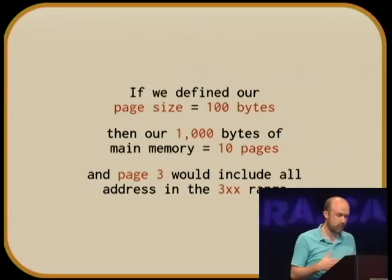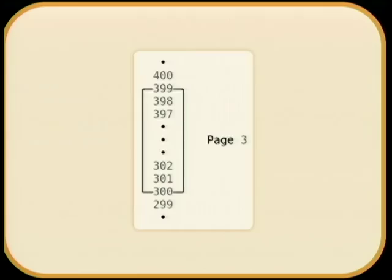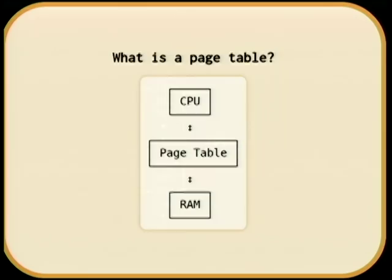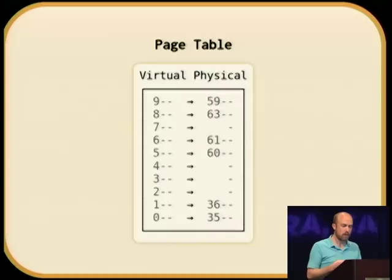If we want a page size of 100 bytes, so our thousand bytes of main memory are 10 pages, then page 3 would include all of the addresses that begin with the number 3: 300 through 399. A page table sits in between the part of the CPU that runs your code and the RAM on your machine, and it rewrites the leading digits of every processor memory access before the RAM chip gets to see it.